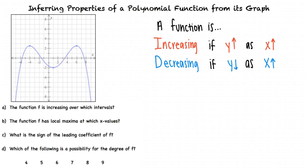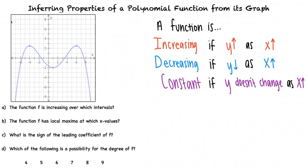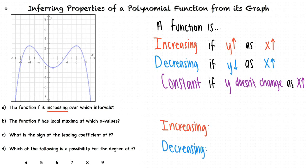A function can also be constant, and this happens over an interval where the graph stays the same height. Our question is looking for where the function is increasing. From negative infinity to negative 4, the graph appears to be rising, which tells us that it's increasing.